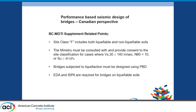Site class F for the new NBCC is described as having a Vs30 shear wave velocity less than 140 meters per second, based on blow count and soil shear strength. The ministry and their supplement are saying: if you have that condition, you have to consult with them and describe what type of analysis you've done to categorize it, and they have to consent to it.